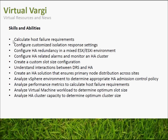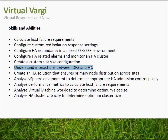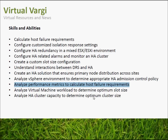Skills and abilities include: calculate host failure requirements, configure customized isolation response settings, configure HA redundancy in a mixed environment, configure HA-related alarms and monitor an HA cluster, create a custom slot size configuration, understand interactions between DRS and HA, create an HA solution that ensures primary node distribution across sites, analyze vSphere environments to determine appropriate HA admission control policy, analyze performance metrics to calculate host failure requirements, analyze virtual machine workload to determine optimum slot size, and analyze the HA cluster capacity to determine optimal cluster size.